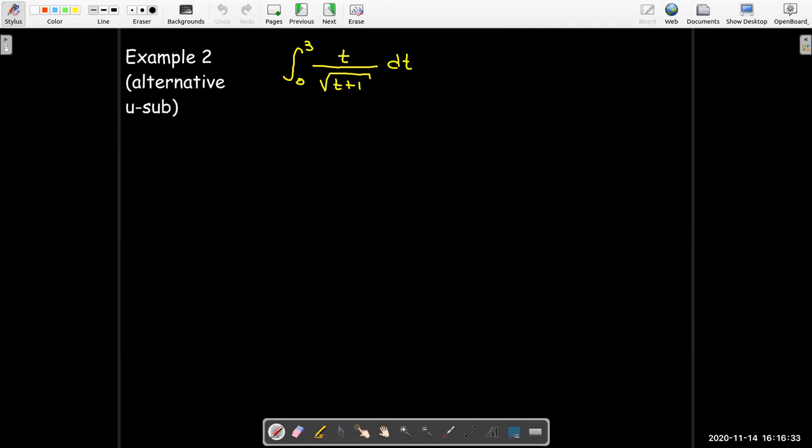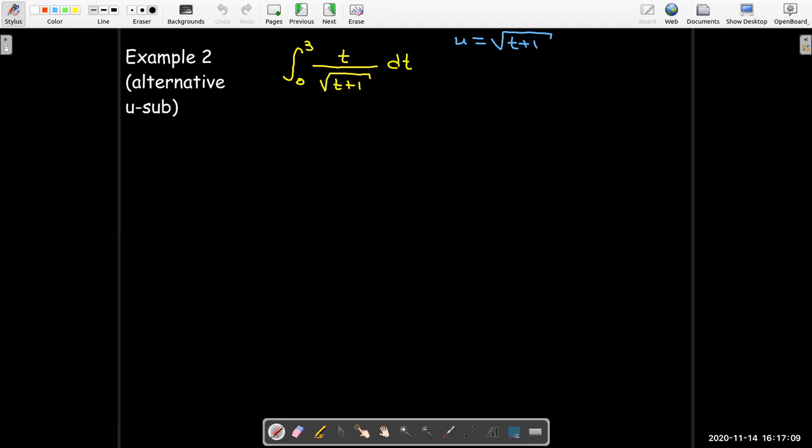Now, there's an alternative u substitution we can use when we have radical expressions. I think it's easier. Maybe you prefer what we just did. You're going to get the same answer. And I think that this expression is easier to work with because you don't get the fractions in the exponents. But that's my choice. And you may choose something different.